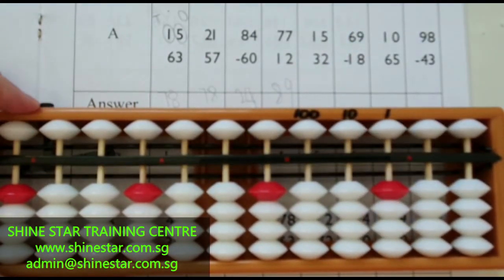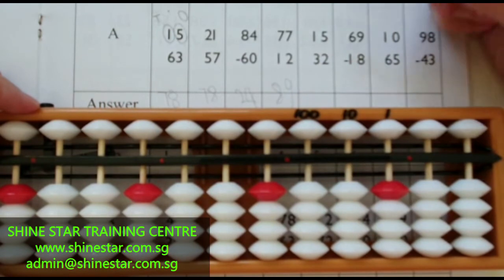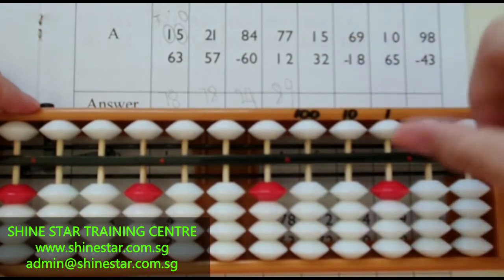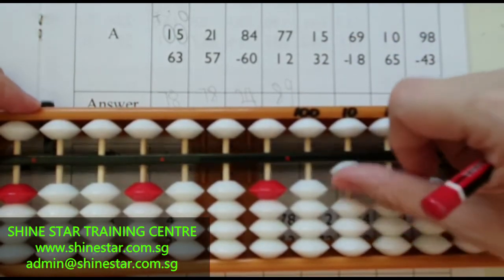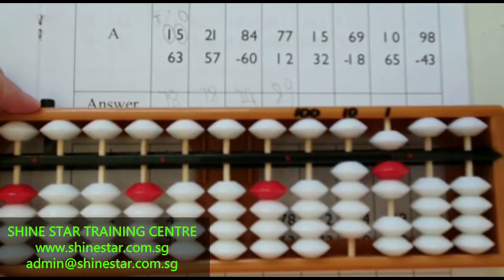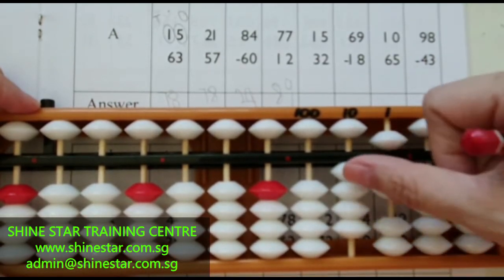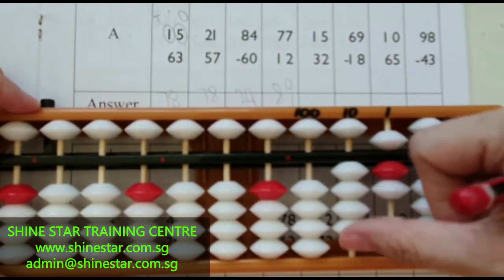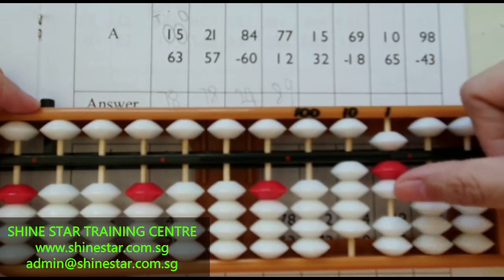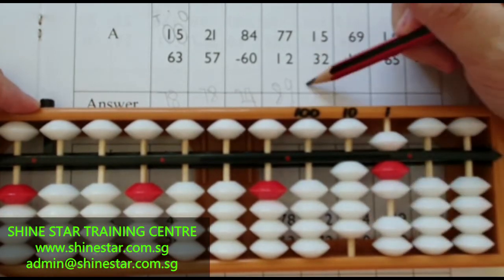The next question: fifteen plus thirty-two. The answer is ten, twenty, thirty, forty, five, six, seven. Forty-seven.